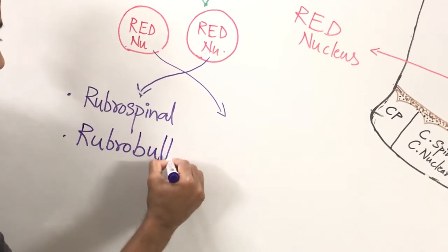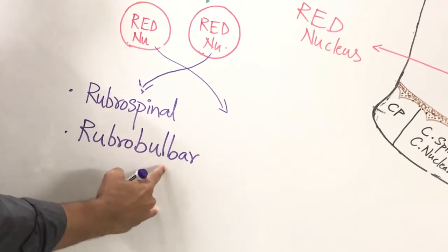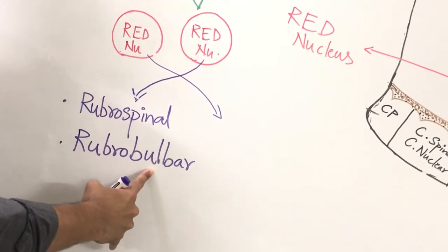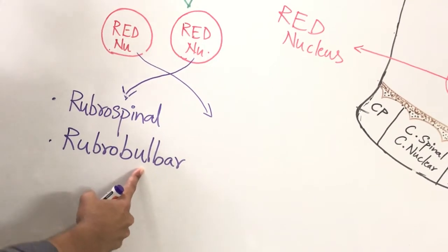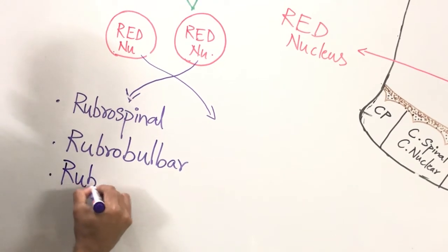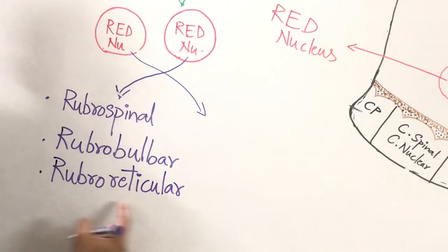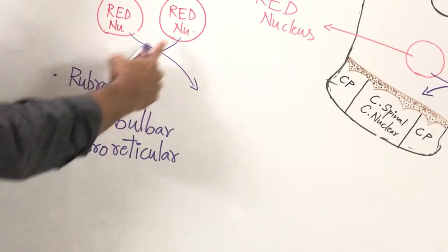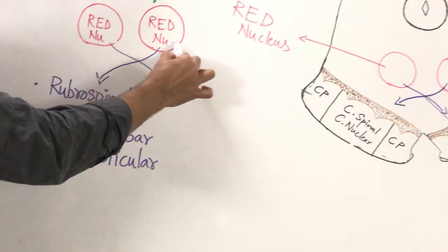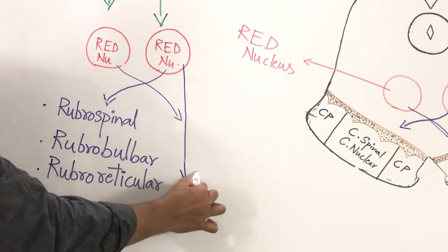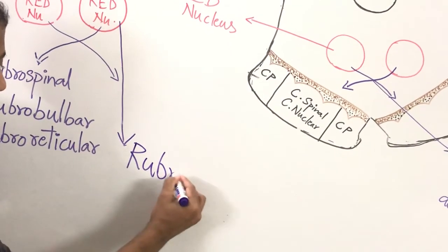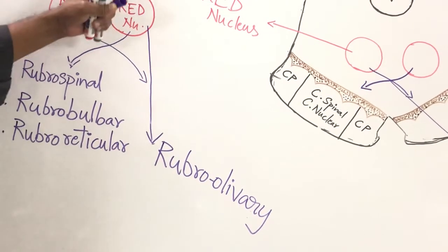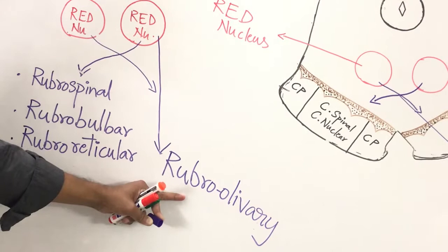Other crossed efferent fibers from the red nucleus include rubrospinal, rubro-bulbar (or rubronu clear) fibers going to the motor nuclei of the fifth and seventh cranial nerves, and rubro-reticular fibers going to the reticular nuclei of the medulla oblongata. There is also one uncrossed efferent fiber: rubro-olivary fibers, which travel ipsilaterally from the red nucleus to the inferior olivary nucleus of the medulla oblongata.